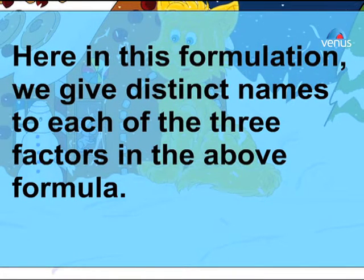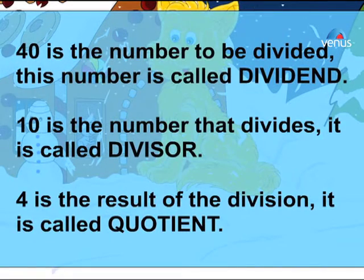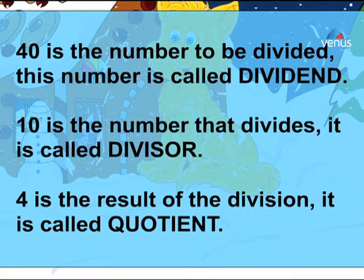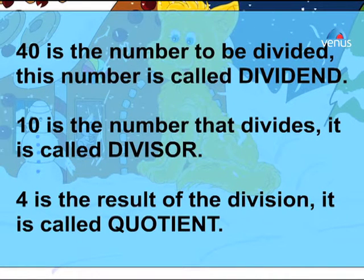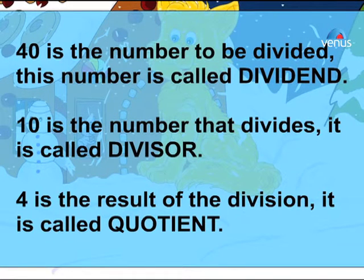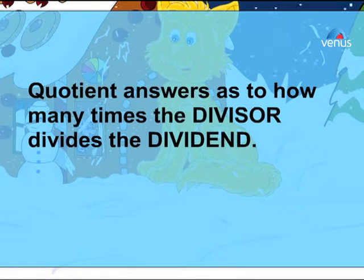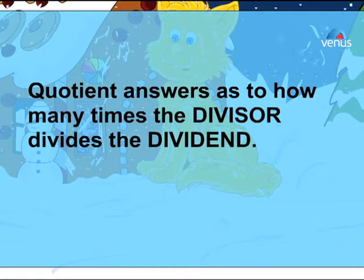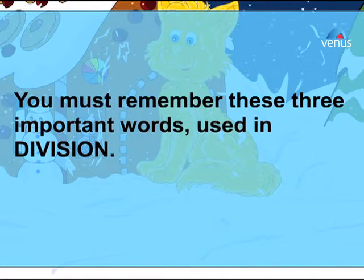40 is the number to be divided; this number is called the dividend. 10 is the number that divides it; it is called the divisor. 4 is the result of the division; it is called the quotient. The quotient answers how many times the divisor divides the dividend. You must remember these three important words used in division.